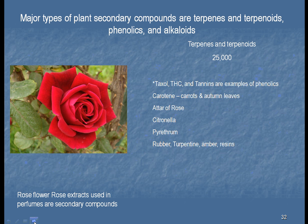Other compounds are divided into terpenes, terpenoids, phenolics, and alkaloids. The important thing to remember is that these secondary compounds help us deal with life. There's a picture of a rose — this rose can be put into perfumes. Later on, I'm going to show you how to take the essence out of that rose so you can make rose water. We also know that carrots have carotene, which may help us with our vision. Citronella may help us stop mosquitoes. Rubber — we all know about. These are again secondary compounds which help us deal with life.